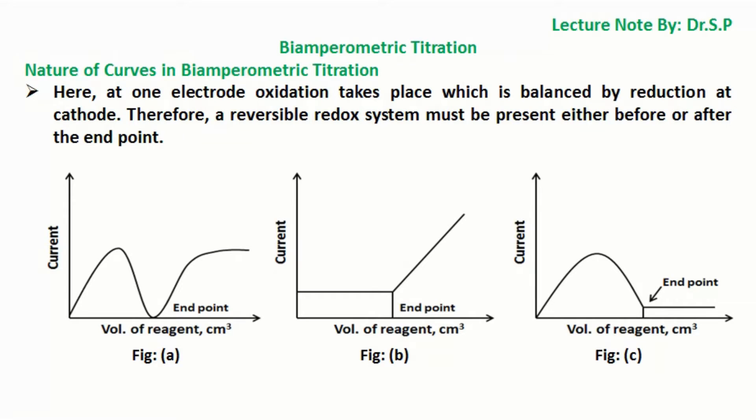Curve A is an example of titration curve when both the reactants behave reversibly at the electrode. For example, iron 2+ with cerium 4+. In this system, both iron 2+/iron 3+ and cerium 4+/cerium 3+ systems behave reversibly at the platinum electrode.